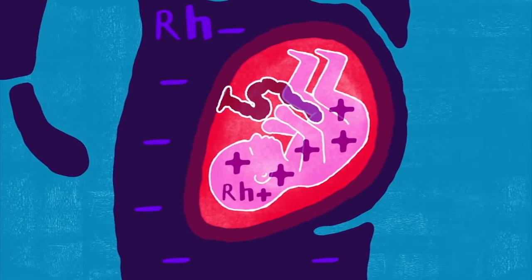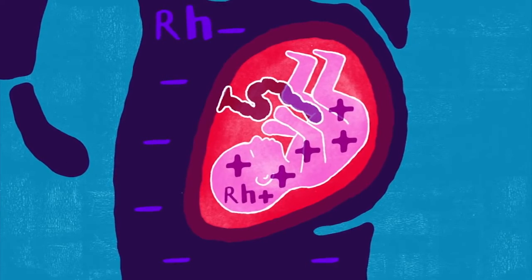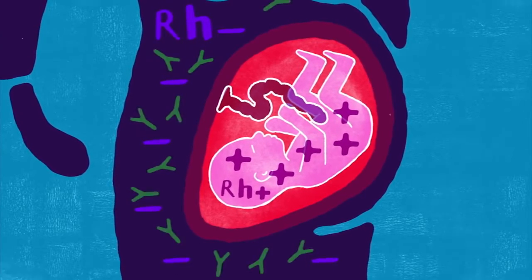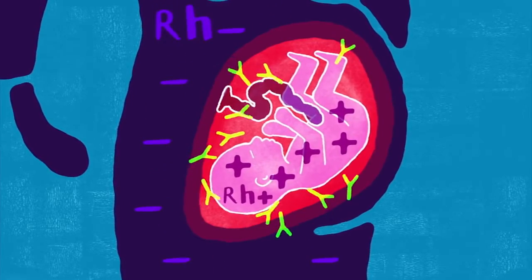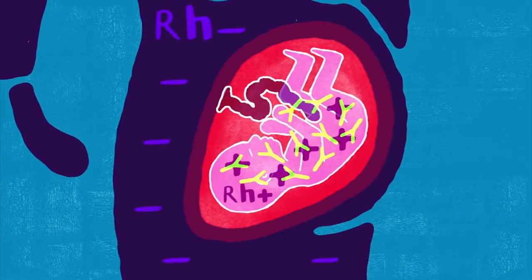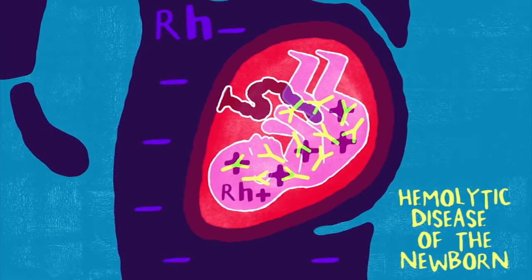If an Rh negative mother is carrying an Rh positive child, her body will produce Rh antibodies that may cross the placenta and attack the fetus, a condition known as hemolytic disease of the newborn.